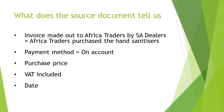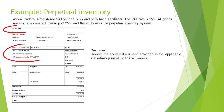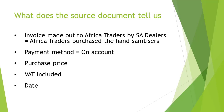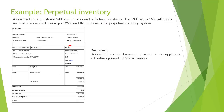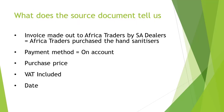The source document tells us that the invoice was made out to Africa Traders by SA Dealers, meaning that Africa Traders purchased the hand sanitizers. Under the Payment Method, it is indicated that the purchase was done on account, which means the purchase of inventory was done on credit. We can also see the purchase price and the amount for value-added tax that's included. The date of the transaction is also recorded on this invoice.